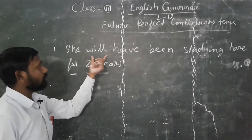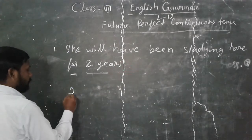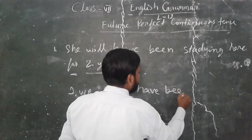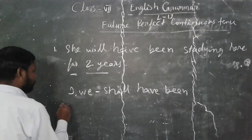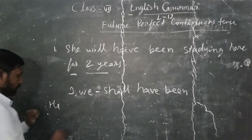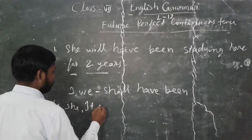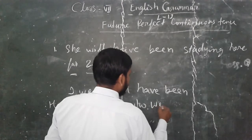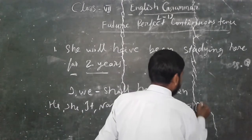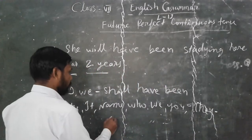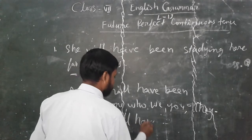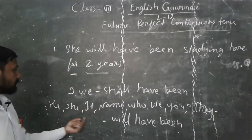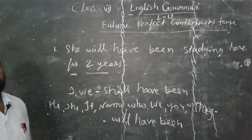Now I would like to tell you one thing about 'will have been' and 'shall have been' — where we will use each. 'I' and 'we' will be used with 'shall have been.' And as subjects like he, she, it, a name, who, you, and they — we will use 'will have been.'